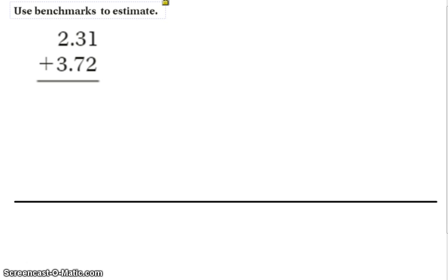So in this problem, we have 2 and 31 hundredths, and we are adding that to 3 and 72 hundredths.